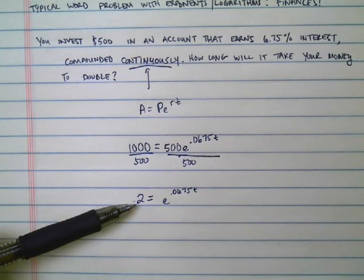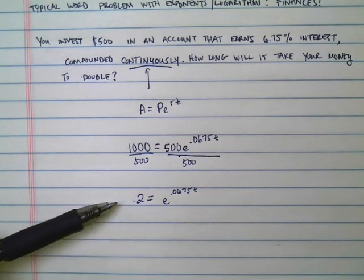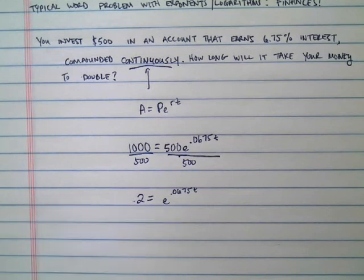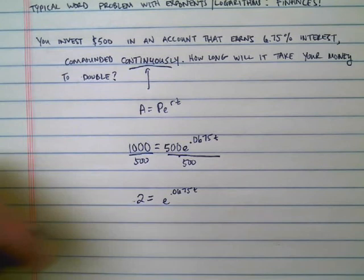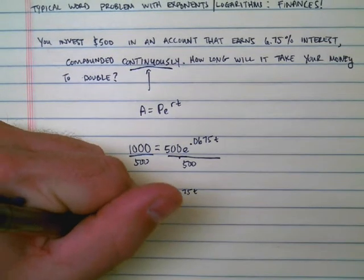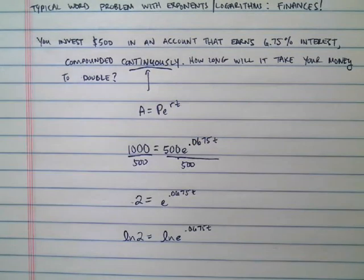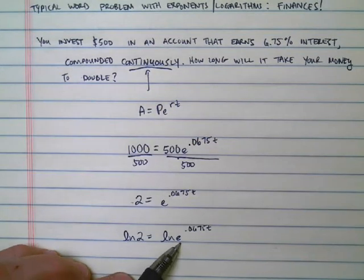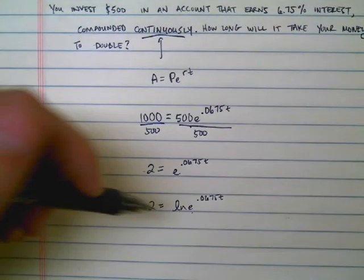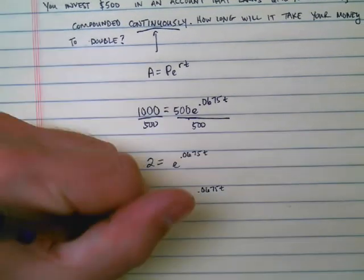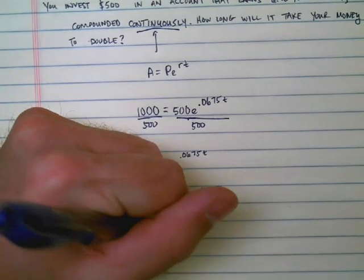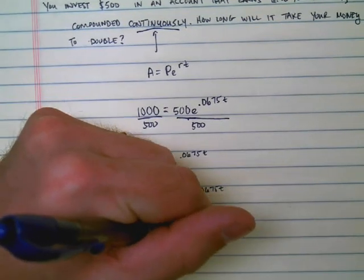So now, how do I get, now that I've got e to this on the right side, and I've got a 2 on the left, how do I get that T by itself? Well, the next step would be to take the natural log of both sides, because I know if I do this, the natural log of e, those two kind of cancel out, and I'm left with this: ln(2) = .0675T.